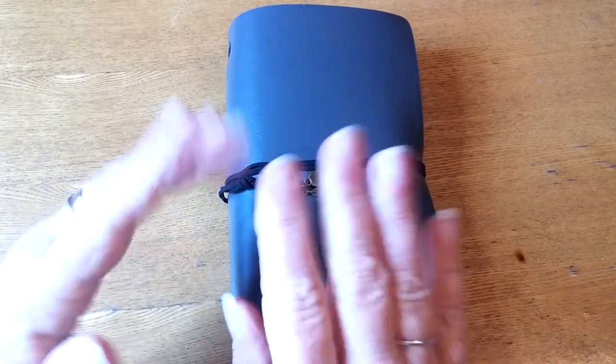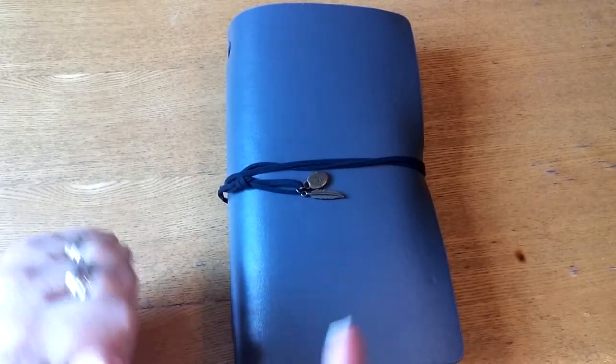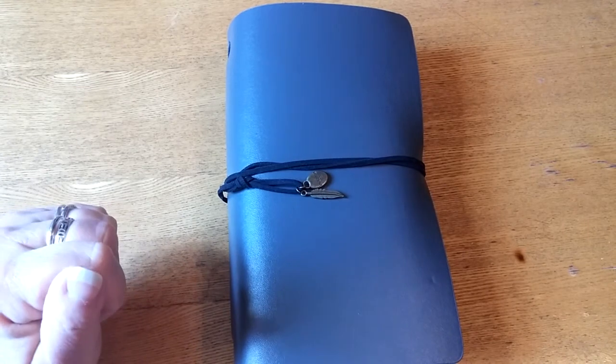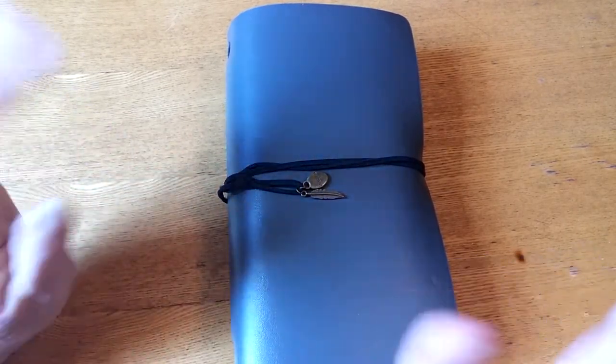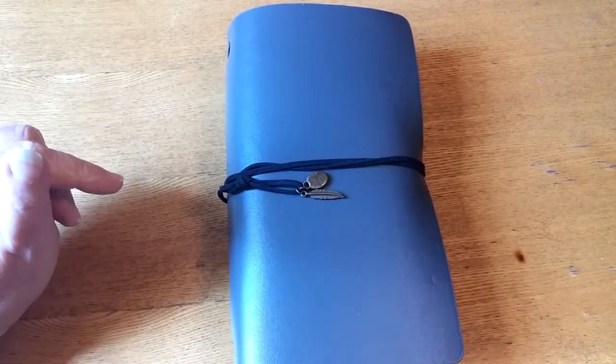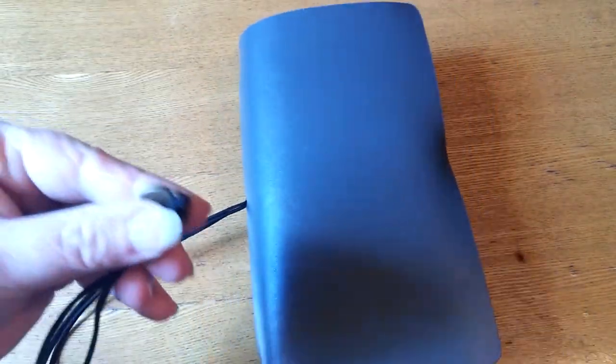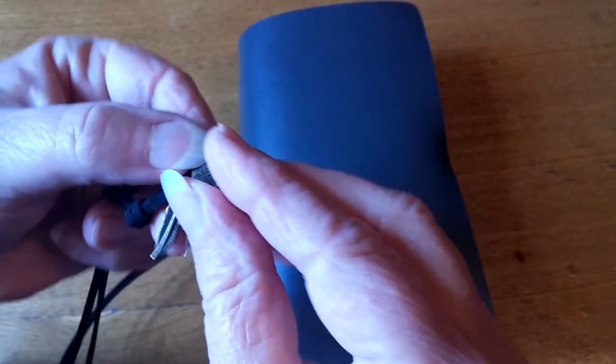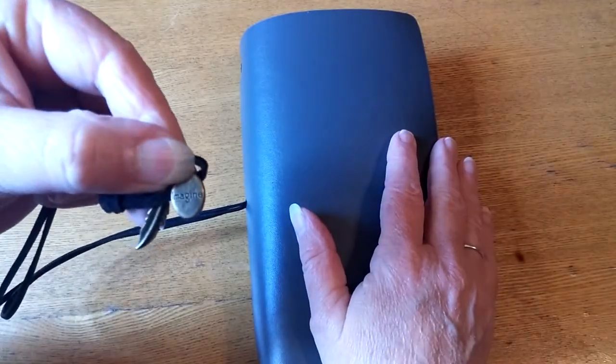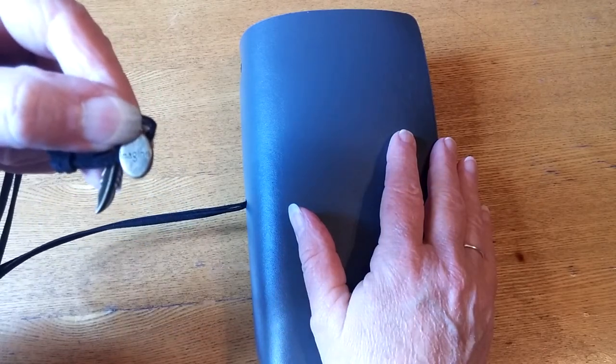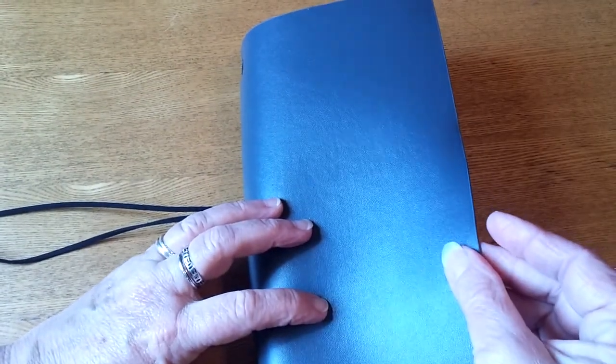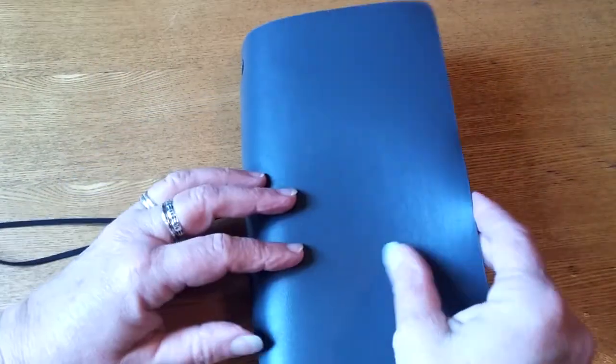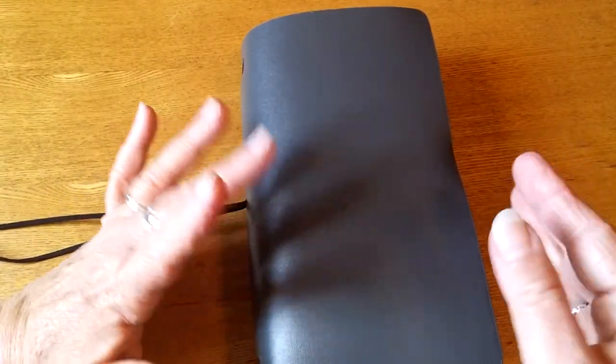This is the plain gray Recollections traveler's journal from Michael's. They don't carry them anymore, you might get lucky and find a stray one somewhere. It comes with this suede tie and two little charms, a feather and one that says imagine. Cover is plain gray leather, not as thick or expensive as a Midori, but it works well.